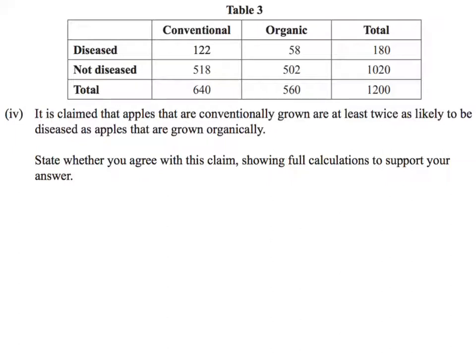It's claimed that apples that are conventionally grown are at least twice as likely to be diseased as apples that are grown organically. The first thing that I see is this phrase here - this jumps out at me: twice as likely.